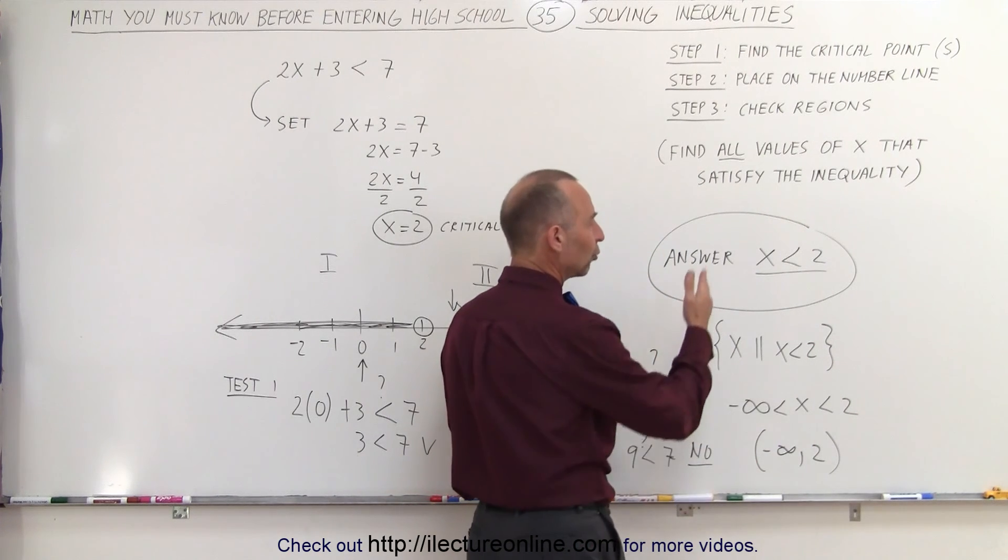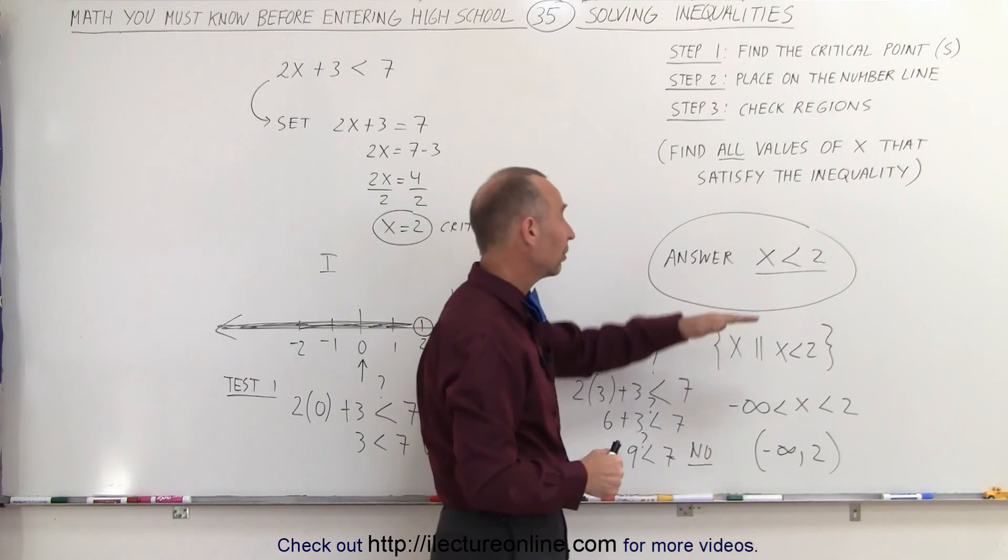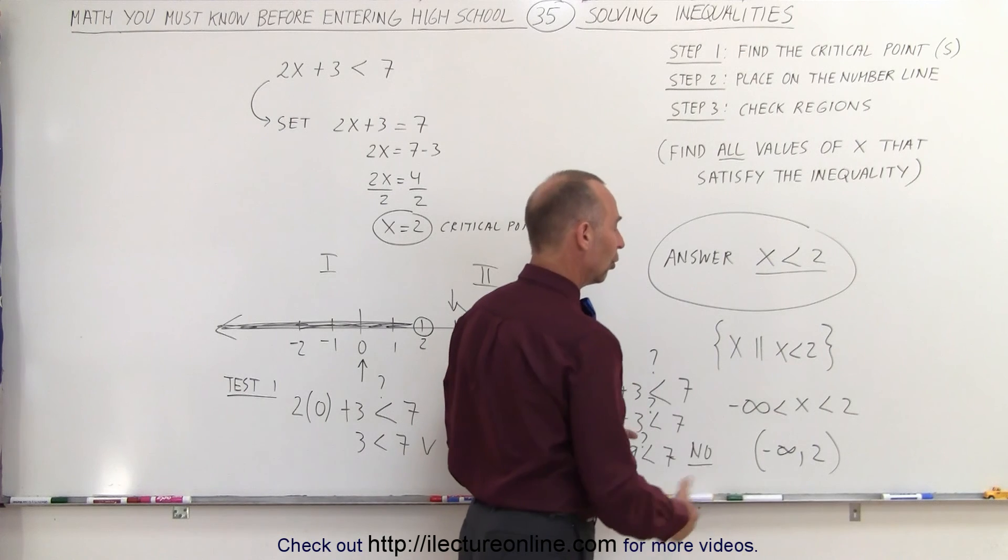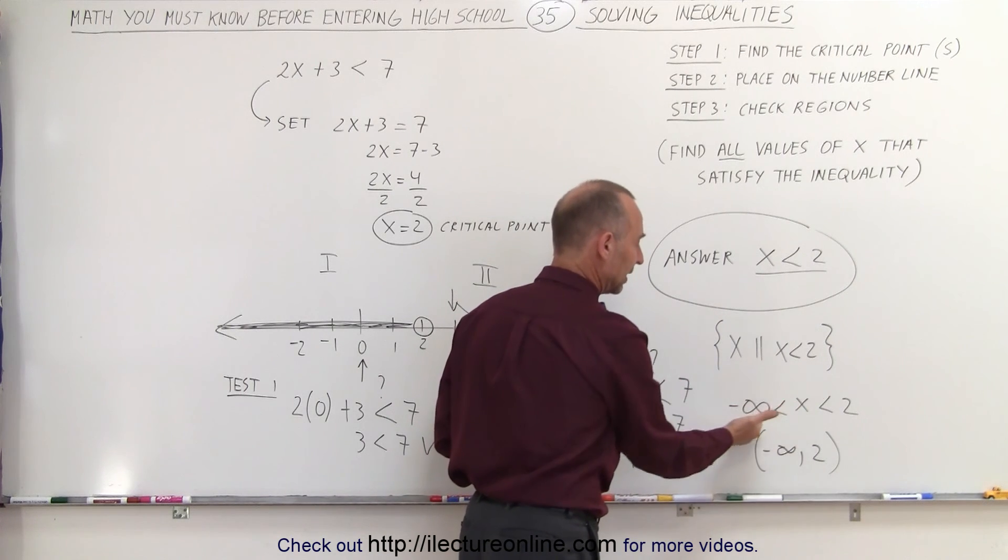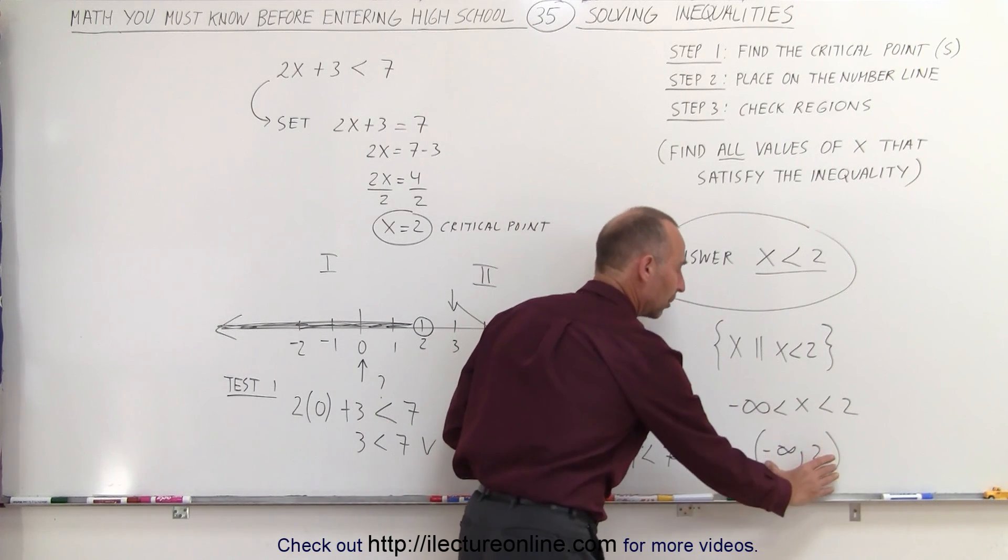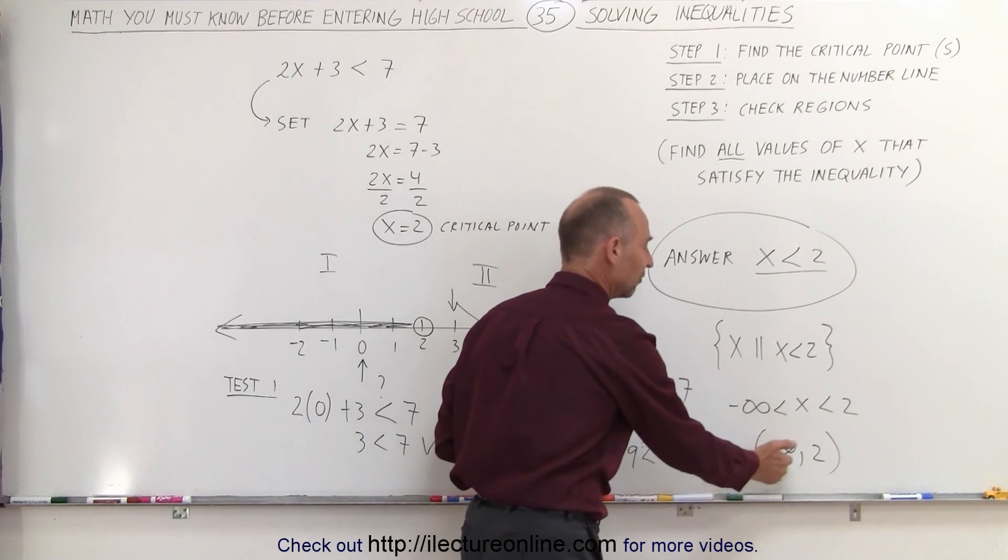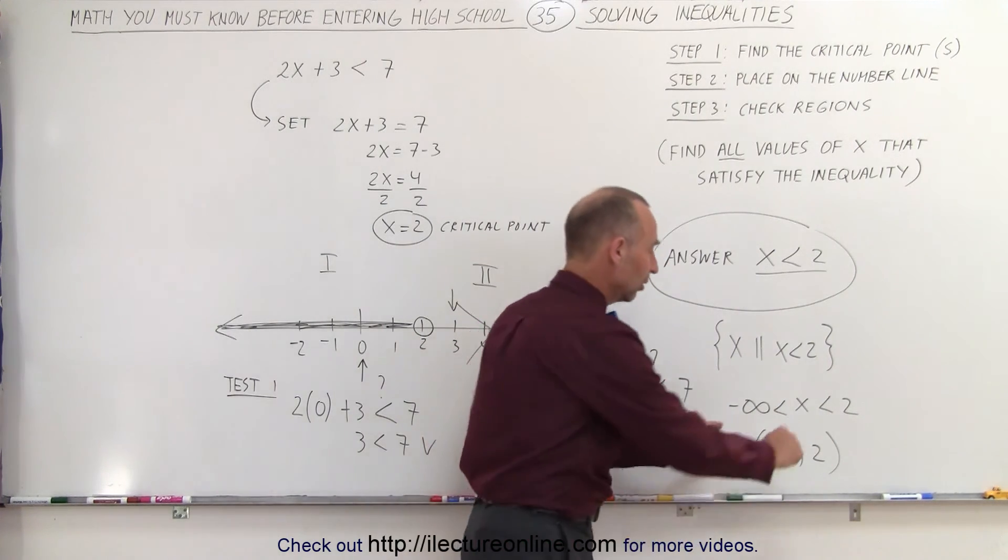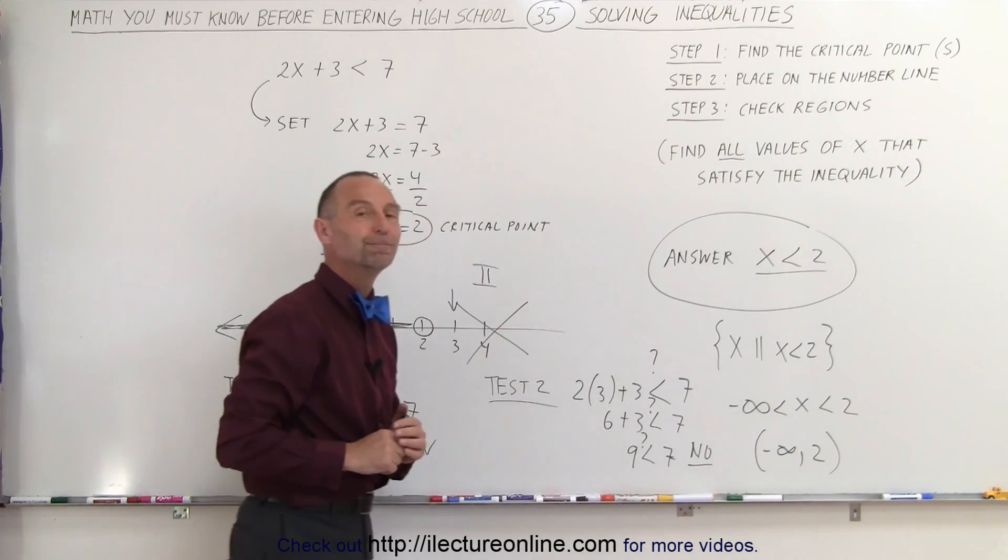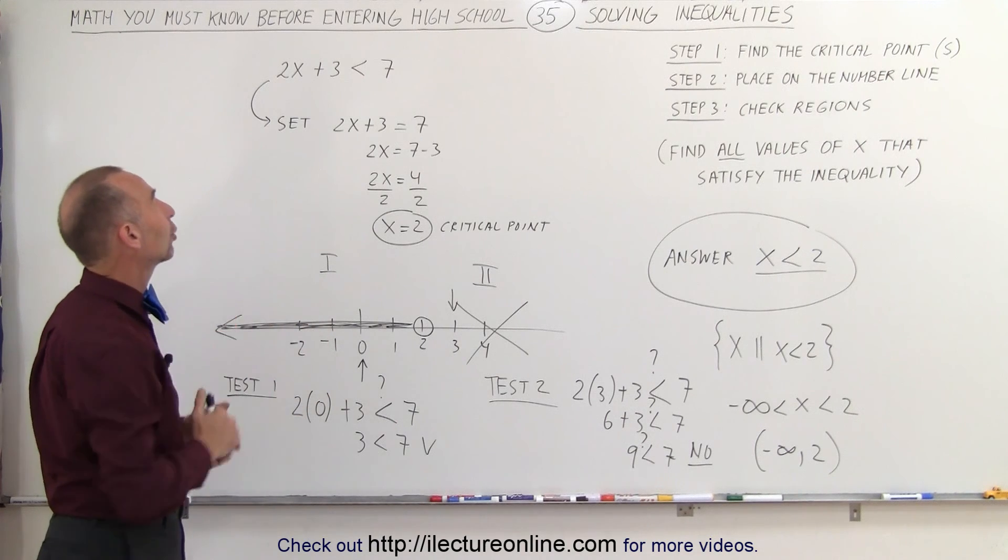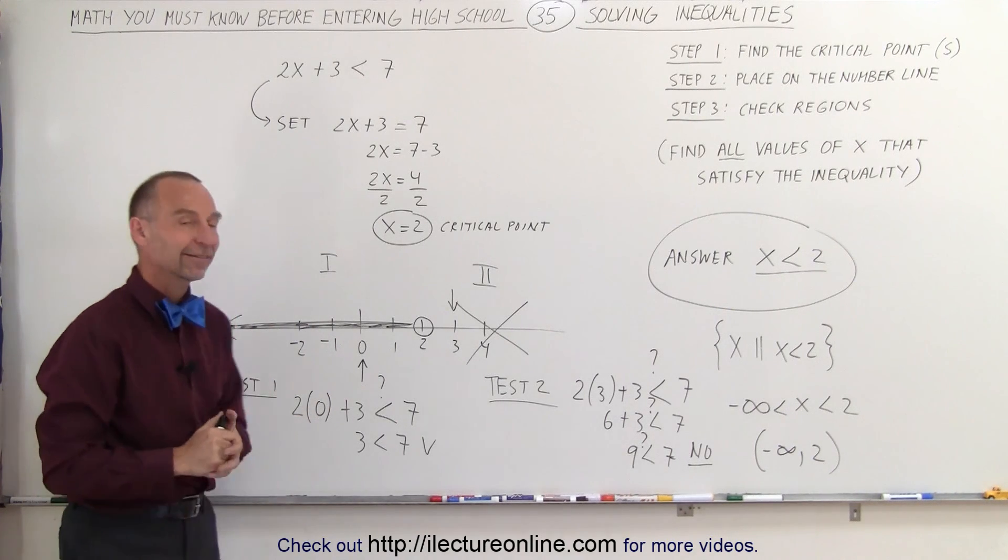So x lies between negative infinity and the number 2 or sometimes we can do it in this notation that negative infinity to the number 2 and not including the number 2. So these are various ways in which we can write the answer. Simply that x is less than 2 or we're looking for all x's such that x is less than 2 or we can say that x is somewhere between negative infinity and 2 or we can put it like that where it's a region on the number line from negative infinity to the number 2. The parenthesis means that the end points are not included. And that's how we find and that's how we solve the inequality 2x plus 3 is less than 7.